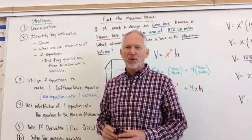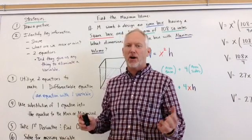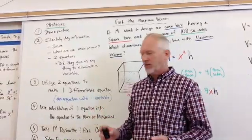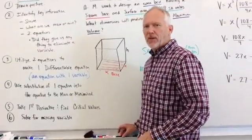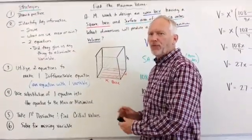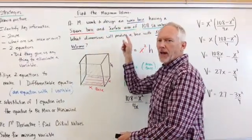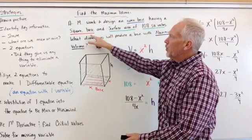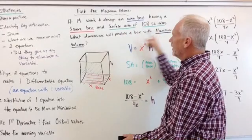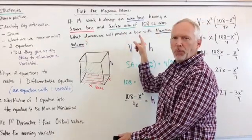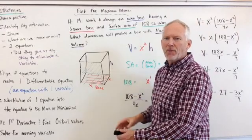Welcome everyone, D Dijkstra here giving you another quick calculus math lesson, and this time it's on optimization. Here we have a problem that states a manufacturer wants to design an open box having a square base and a surface area of 108 square inches. What dimensions will produce a box with a maximum volume?